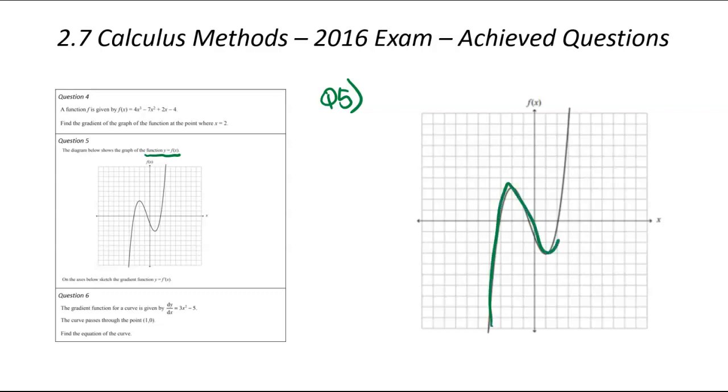So this graph, we need to see lots of little things, pull it all out, and put all that information together for what the gradient function might look like. So the first thing I'm seeing is this here is a positive cubic. I'm just going to make up a formula. So if you think of a positive cubic, y equals x cubed. That's a positive cubic. If you differentiate that, that's going to become 3x squared.